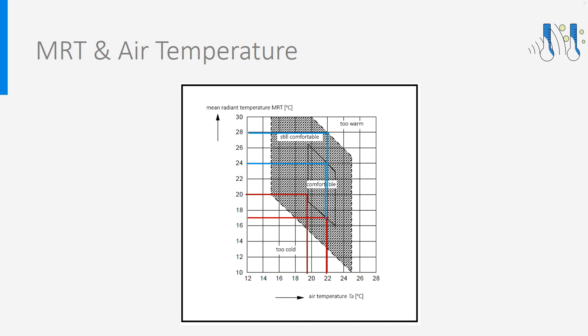This diagram also explains why in cold countries, radiators are generally placed on walls and under the window. This is because the hot radiator not only brings the needed heat, but is also used to compensate for the cold surface temperature of outer walls and windows, increasing this way the MRT towards a comfortable level.